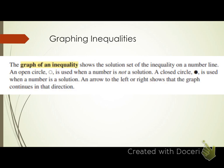The graph of an inequality shows the solution set on a number line. An open circle means that number is not included in the solution set; a closed circle means it is a solution and is included. An arrow to the left or right shows that the graph continues in that direction infinitely.